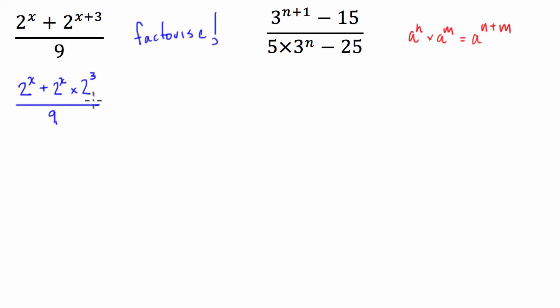Now, what we can see here is you've already got this common factor on either side of the addition sign of 2 to the power of x. So I'm going to factorize the numerator by 2 to the power of x. And to get to 2 to the power of x, I just have to multiply it by 1. And to get to 2 to the power of x times 2 to the power of 3, I have to multiply it by 2 to the power of 3. And that's all divided by 9.